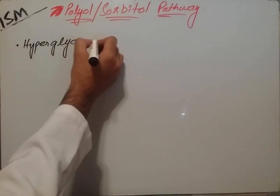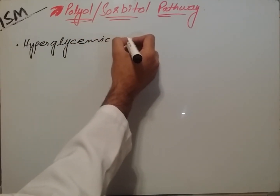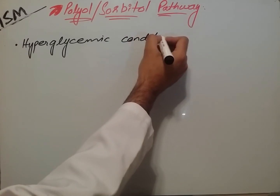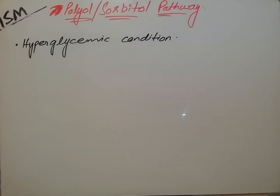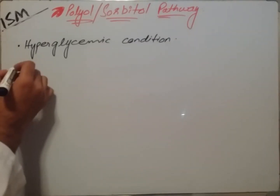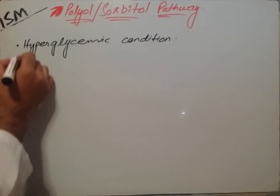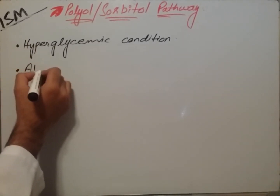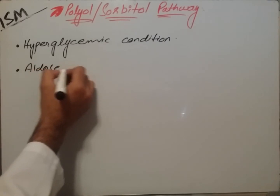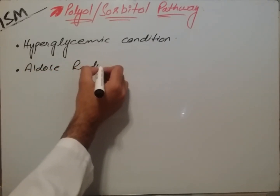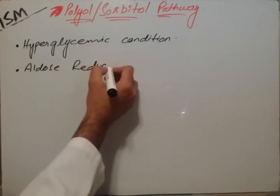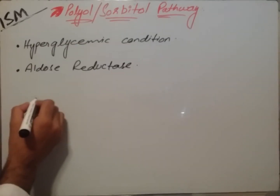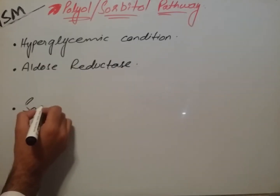The enzymes which help in the sorbitol pathway are aldose reductase and sorbitol dehydrogenase. Aldose reductase converts the aldehyde group of glucose into an alcohol group, and sorbitol dehydrogenase converts the alcohol group into a keto group.